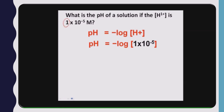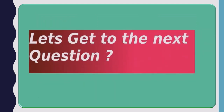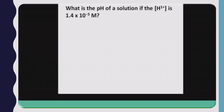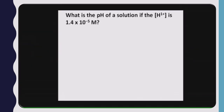We have the answer: pH = −(−5). Since negative times negative is positive, our pH equals 5.